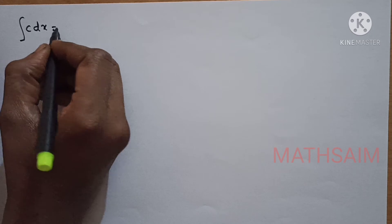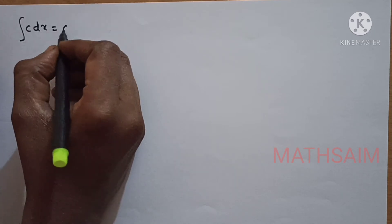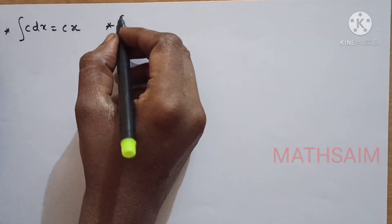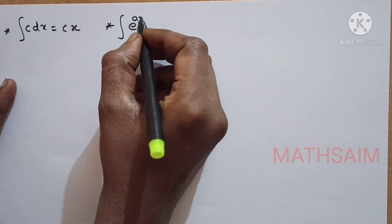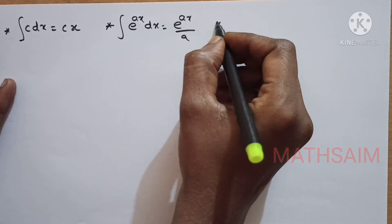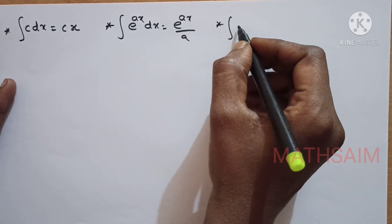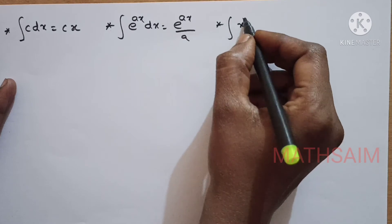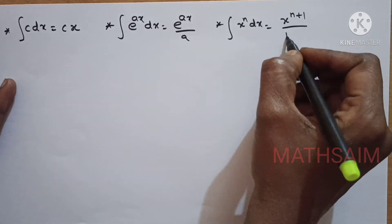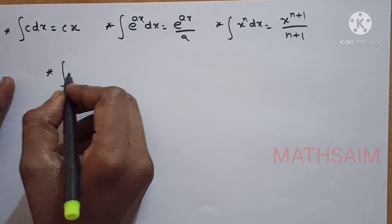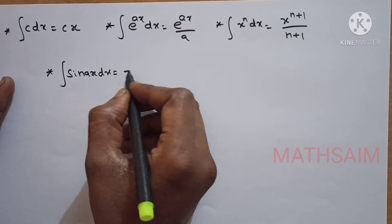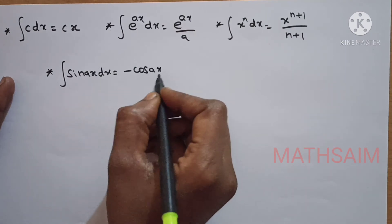So, integration of dx is what? Integration of a constant term — it is c into x. And the next thing is integration of the exponential term: e power ax into dx is e power ax by a. And then, what is integration of x power n into dx? It is x power n plus 1, by n plus 1. And then, one more: integration of sin ax into dx is equal to minus cos ax by a.